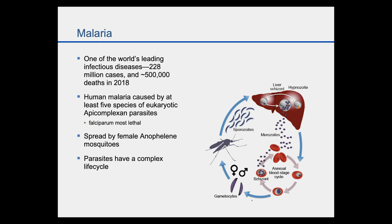Human malaria is caused by at least five species of eukaryotic apicomplexan parasites. Plasmodium falciparum malaria is the most lethal, and what I'll be talking about most this afternoon. Malaria is spread by female anopheline mosquitoes, and the parasites have a very complex life cycle, which I'll briefly describe.